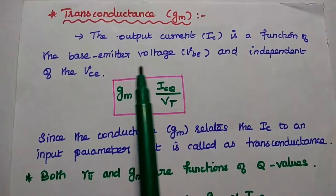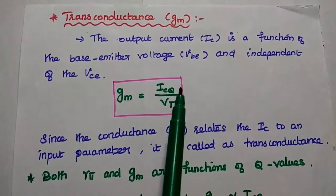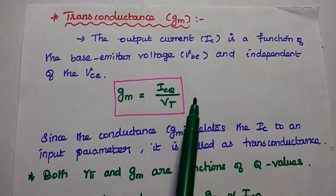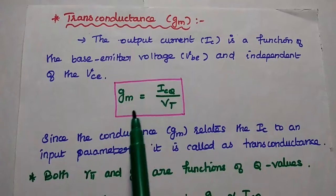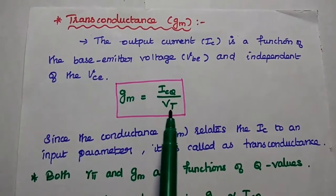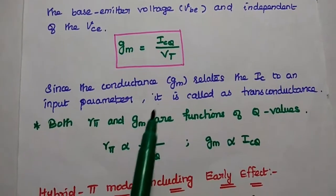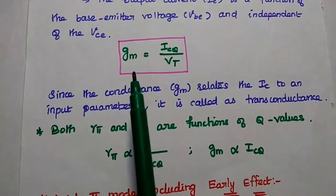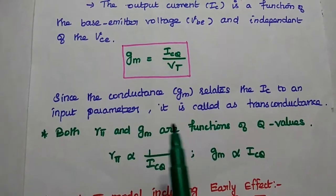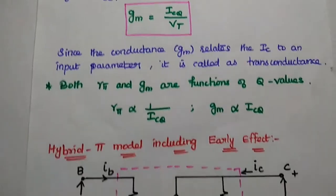Next is transconductance G_m. In the hybrid pi model, the output current is a function of input voltage V_BE and is independent of output voltage. Hence it is called transconductance, because it relates the output current to the input voltage. Here V_T is the cut-in voltage. From this, we see that transconductance G_m is directly proportional to I_CQ, while R_pi is inversely proportional to I_CQ. Both are functions of Q point values.